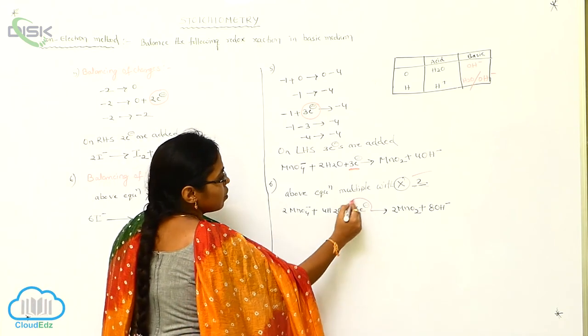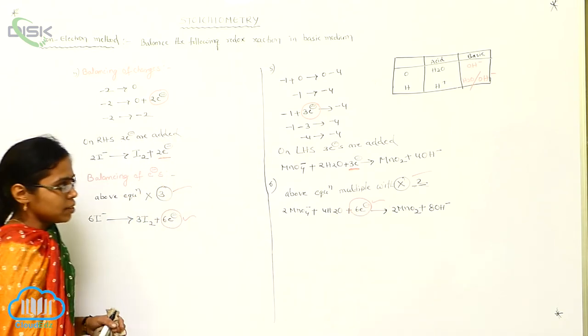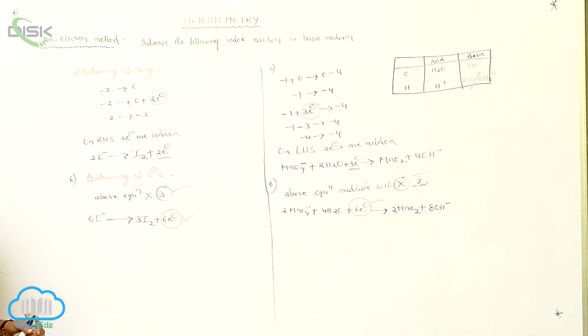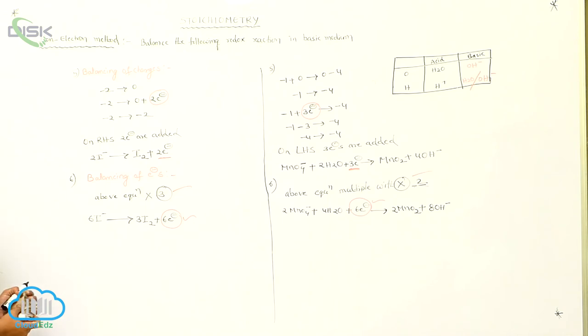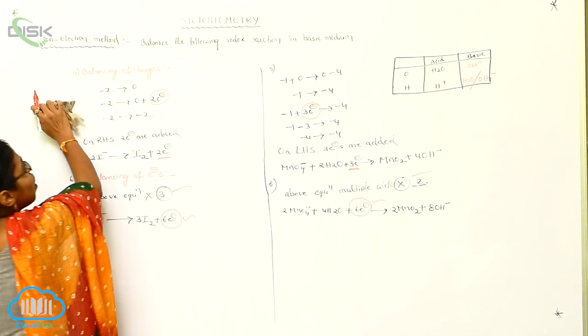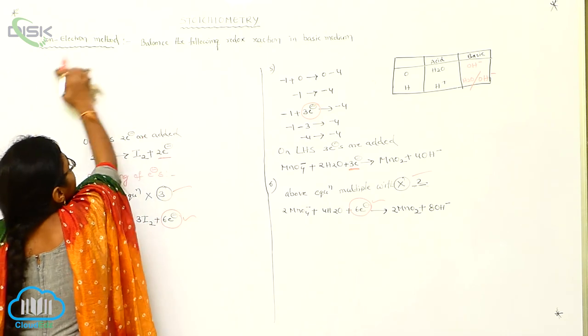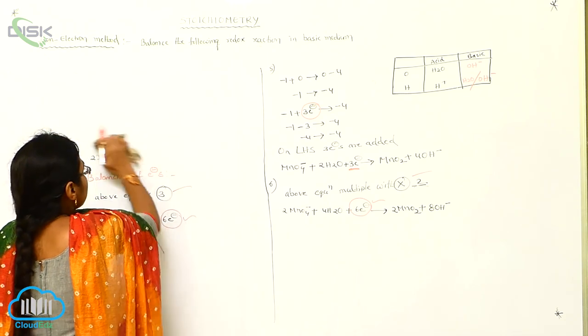So here also the number of electrons are balanced. The next step — the seventh step — is nothing but the addition of the oxidation and reduction half-reactions.